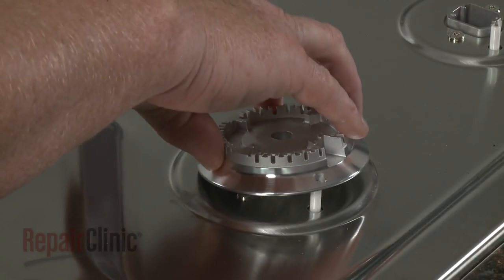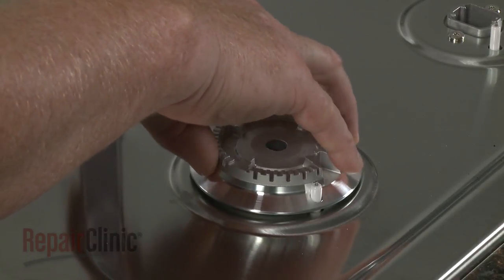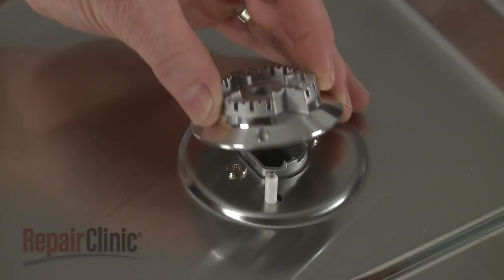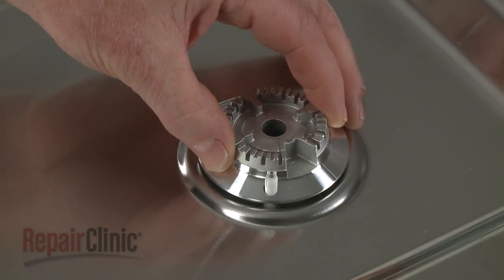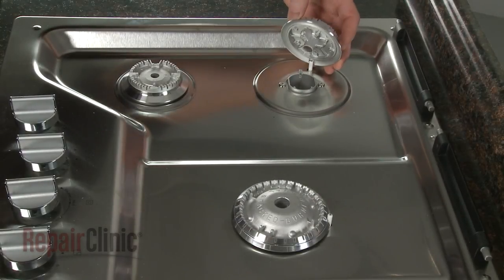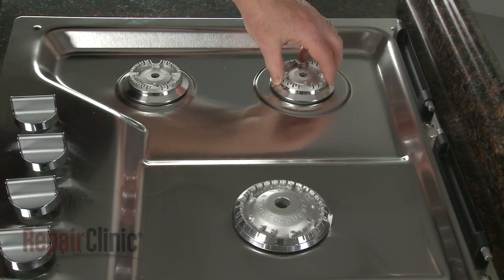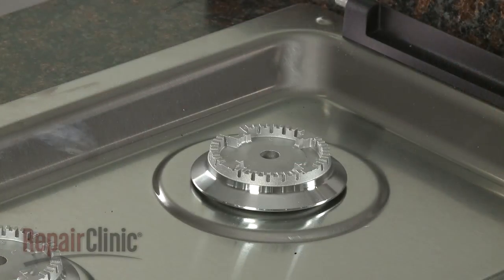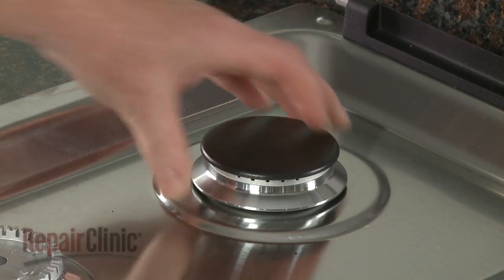Align each burner base with the appropriate orifice holder so the igniter electrode protrudes through the hole in the base. Next, position the burner caps on the bases.